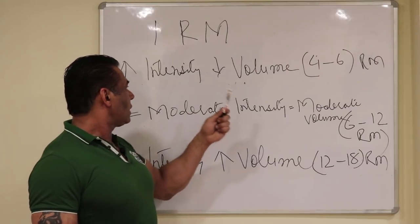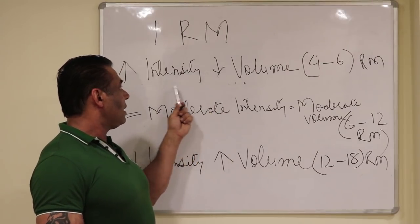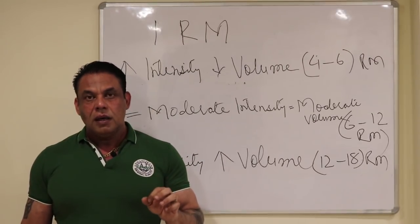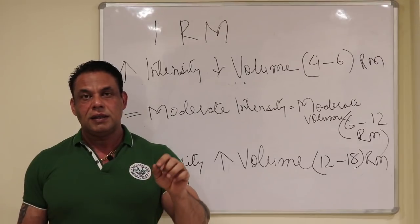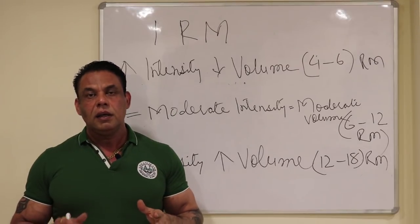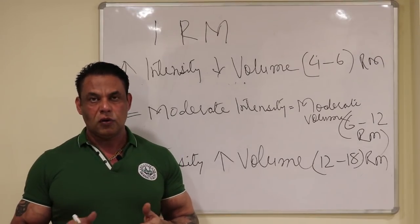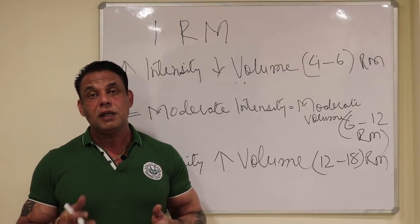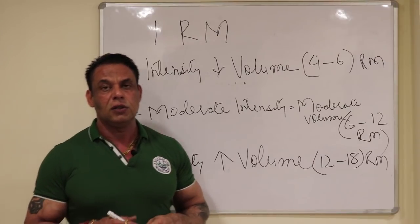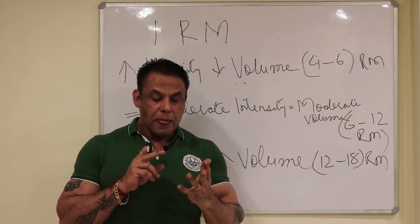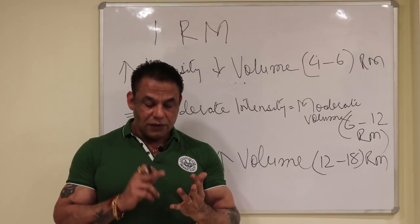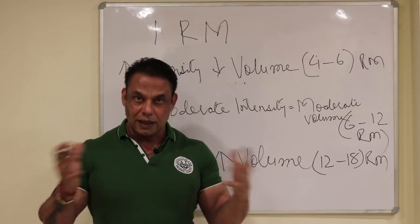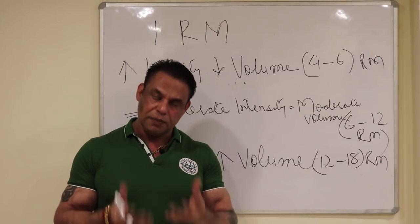When we do 4 to 6 strength training, high intensity, low volume, we induce damage in the muscle, we induce trauma where muscle cell disruption occurs. That is followed by inflammatory response, inflammation, followed by immune system response, followed by hormonal response, and ultimately protein synthesis.